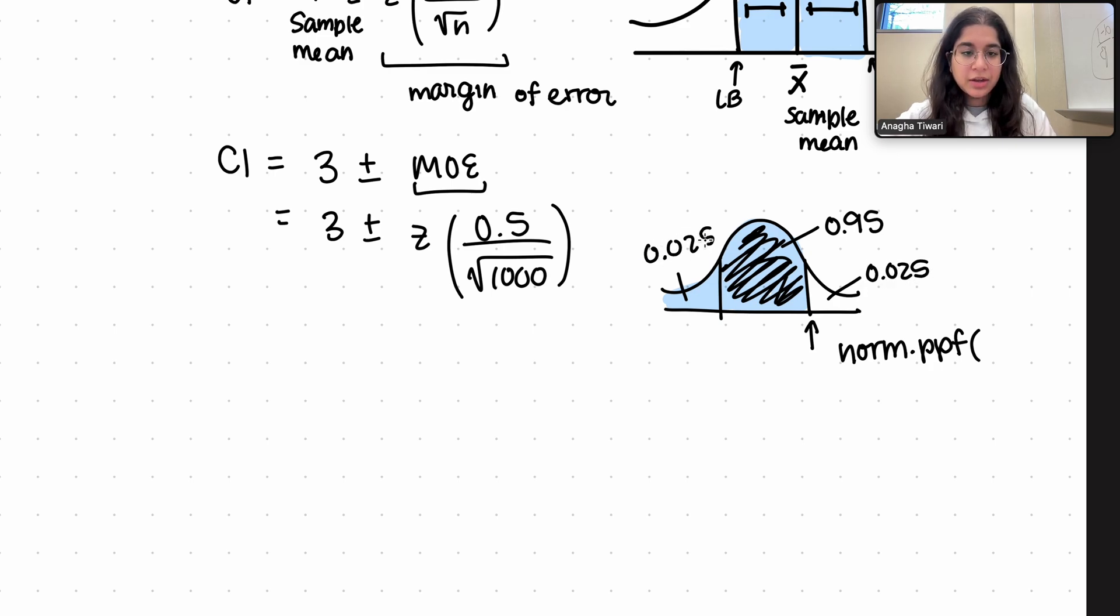Because we know the total area under the bell curve is going to be 1, it's going to be 0.025. So basically to find the z score we can just do norm.ppf of 0.975.